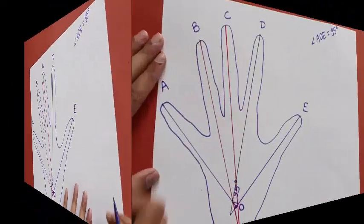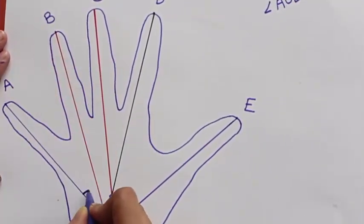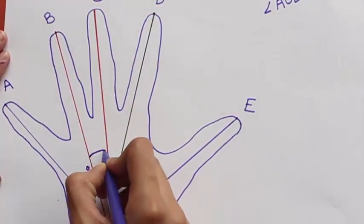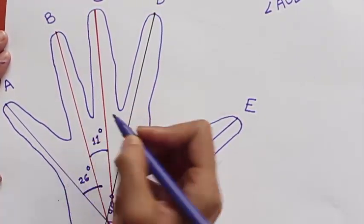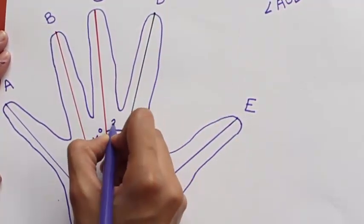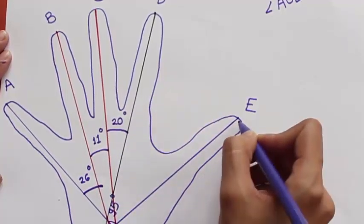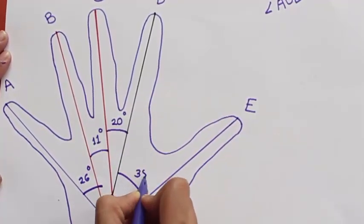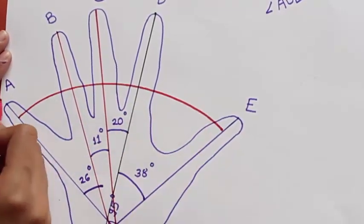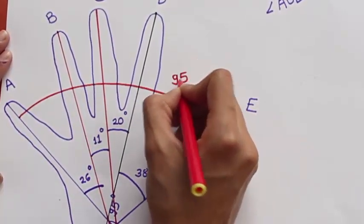Let's try to find all these angles between the little finger and the ring finger, which is 26 degrees. The ring finger and the middle finger 11 degrees. Middle finger and the index finger 20 degrees. And index finger and the thumb which is 38 degrees.